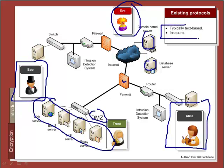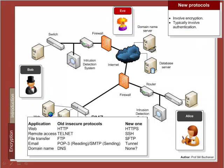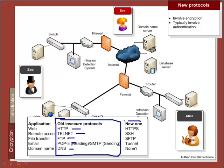Unfortunately, the protocols we have created to allow communications are typically text-based and are seen as insecure. So we are moving away from insecure protocols such as HTTP, Telnet, FTP, POP3, SMTP, and DNS into a new domain which typically involves some sort of security — either encryption or integrated authentication. These new protocols typically involve both encryption and some form of authentication.